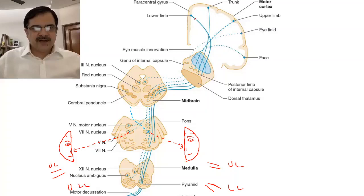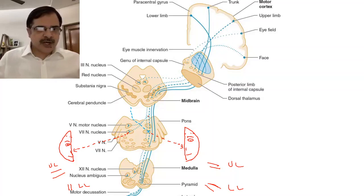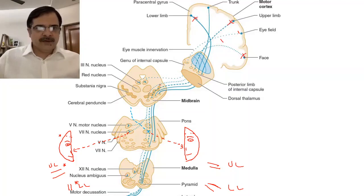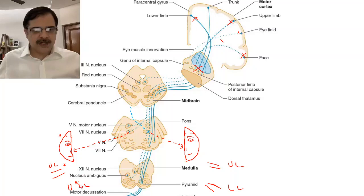So let's see one by one. If the lesion is in the cortex, the opposite side of the face will be affected, along with the opposite side of the upper limb and lower limb — they will have weakness. Similarly, if there is a lesion at the internal capsule, the opposite side of the face and the opposite side of the upper limb and lower limb will be weak or affected.